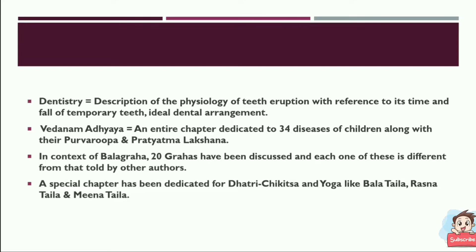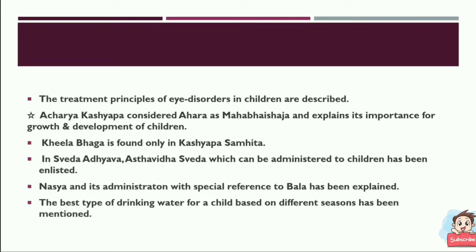In the context of Balagraha, 20 grahas have been discussed, each different from those described by other authors. A special chapter is dedicated to Graha Chikitsa and yoga preparations like Balataila, Rasnataila, and Meenataila. The treatment principles of eye disorders in children are also described. Acharya Kashyapa considered Ahara as Mahabhaisajya and explained its importance for the growth and development of children.